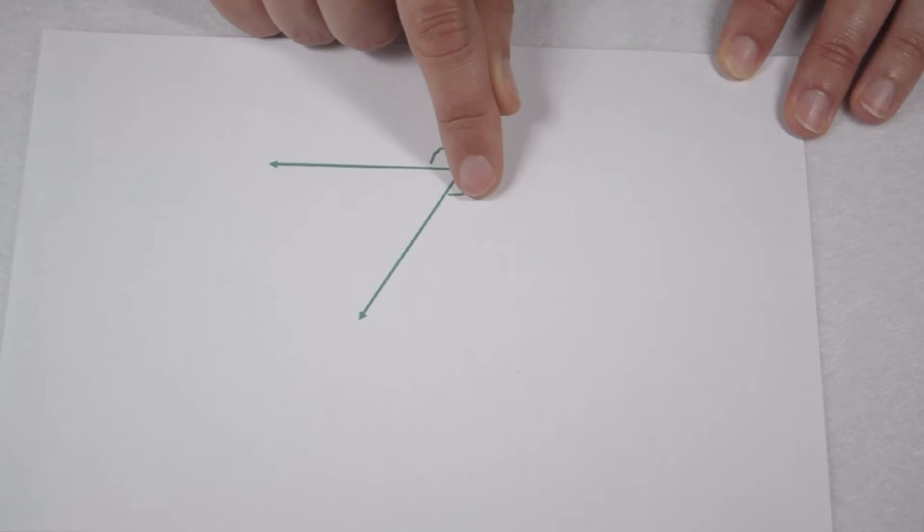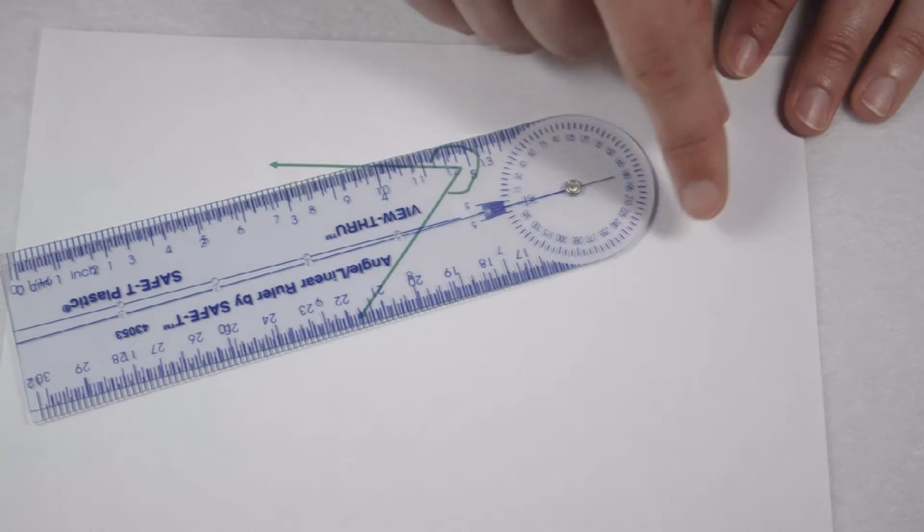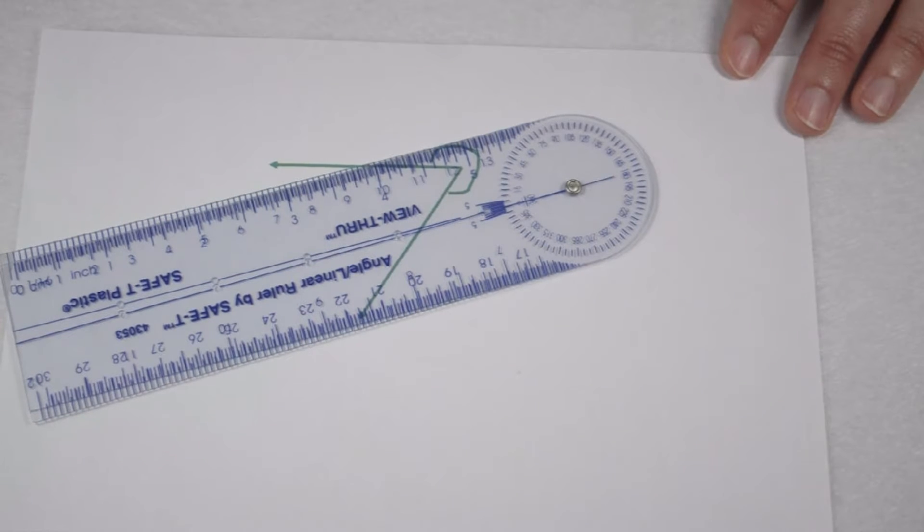Looking at this angle, we can tell by the way it's labeled that it's a reflex angle. This means it's going to be between 180 and 360 degrees. An advantage to using an angle ruler is that it measures all the way up to 360 degrees.